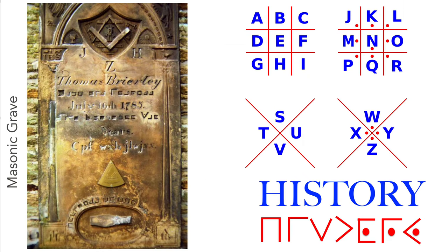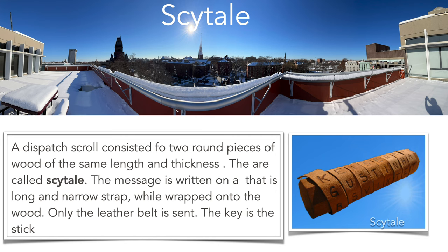The Pigpen cipher has the advantage that one can reconstruct it easily from memory because it is so well known, but as just a substitution cipher it's probably one of the worst ciphers which exist. It is still historically interesting as it has been used already during the Crusades, between 1000 and 1200.